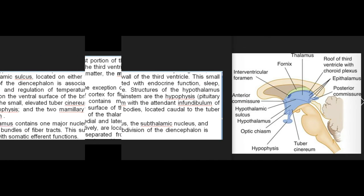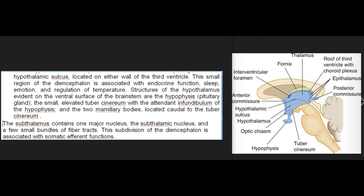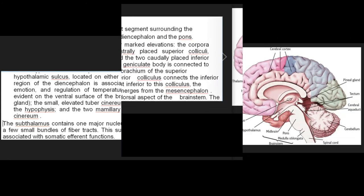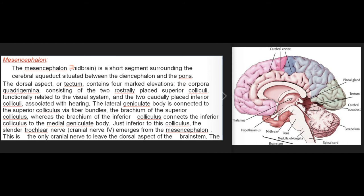The hypothalamus is separated from the thalamus by the hypothalamic sulcus on either wall of the third ventricle. This small region of the diencephalon is associated with endocrine function, sleep, emotion, and regulation of temperature. Structures of the hypothalamus evident on the ventral surface of the brainstem include the hypophysis (pituitary gland), the small elevated tuber cinereum with the attendant infundibulum of the hypophysis, and the two mammillary bodies located caudal to the tuber cinereum. The subthalamus contains one major nucleus — the subthalamic nucleus — and a few small bundles of fiber tracts, associated with somatic efferent functions.